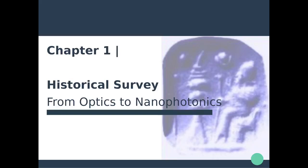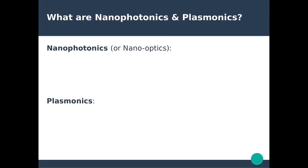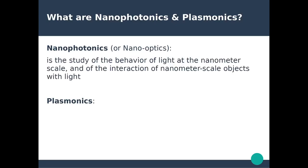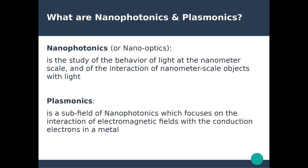Hello everyone and welcome to this nanophotonics and plasmonics course. We're going to start with a brief historical survey of optics, electromagnetism and nanophotonics. Nanophotonics is the study of light at the nanometer scale and the interaction of light with nanometer-scale objects. Plasmonics is a sub-field that focuses specifically on the interaction of electromagnetic fields from light with the conduction electrons in metals. In the end, nanophotonics broadly defined is the interaction between light and matter at the nanoscale.